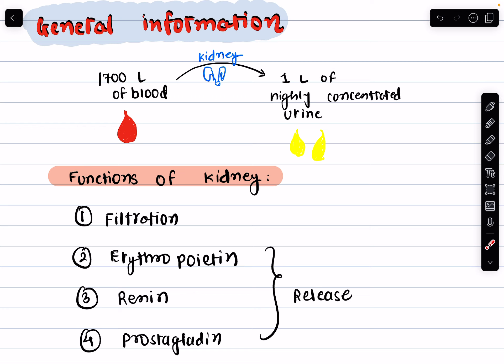Now let's talk about the amazing functions of the kidney — they do so much more than just filter the blood. First, they filter out waste products from our blood, which is crucial for keeping our bodies healthy. Second, they release erythropoietin, which stimulates the production of red blood cells — without this hormone we would be anemic and tired. Next, the kidney releases renin, a protein and enzyme that helps regulate our blood pressure, playing a crucial role in maintaining cardiovascular health.